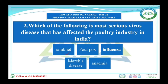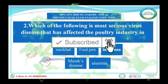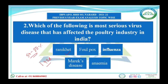Ranikhet disease has caused heavy economic losses to the poultry industry as it has a high mortality rate of 50 to 90 percent and causes a high drop in egg production. Its synonym is Newcastle disease. The first case was recorded in 1928 at Ranikhet, near Almora in India. It is caused by Paramyxovirus and spreads through infected feed, water, and air, with airborne transmission being the most important route. Symptoms include loss of appetite, gasping, difficulty in breathing, sneezing, coughing, nasal discharge, paralysis of one or both legs or wings, and dropping egg production.